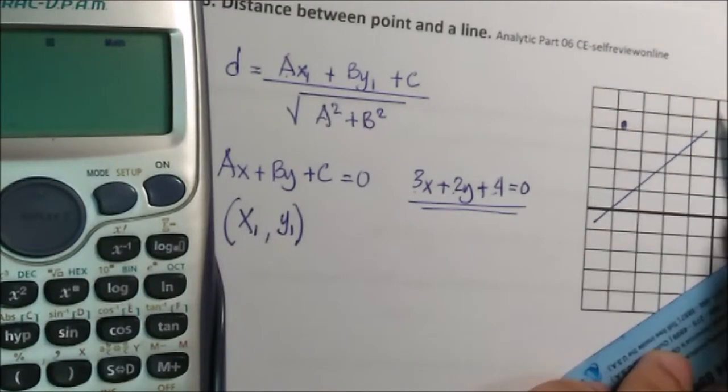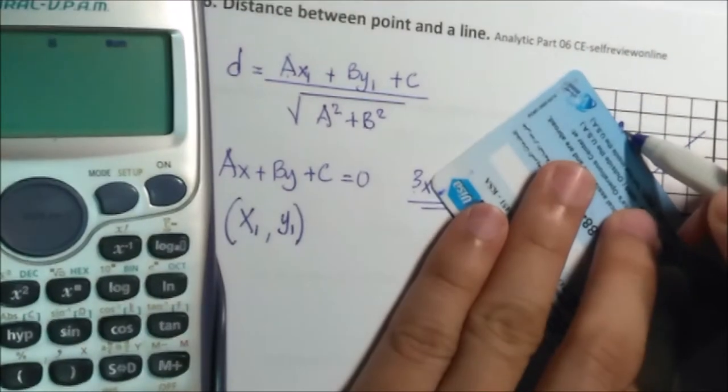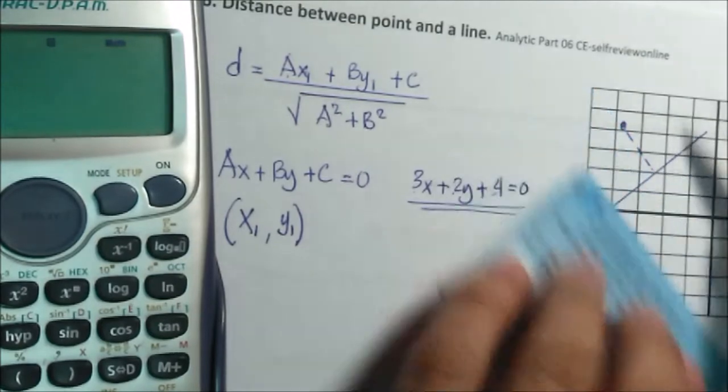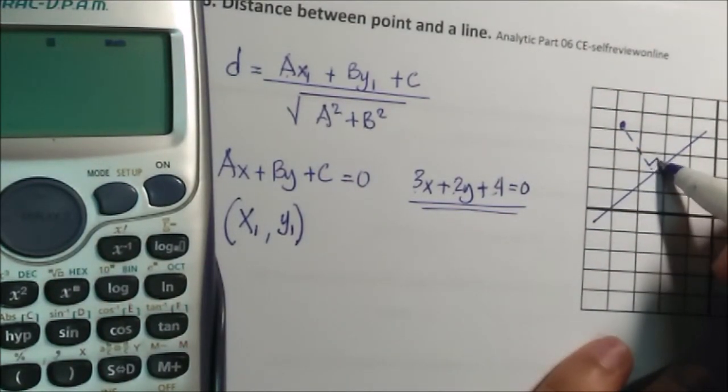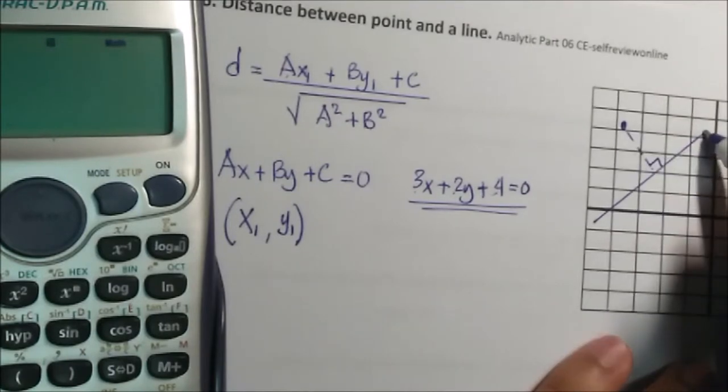And there's a point here, what is the distance? When we say distance, this is the perpendicular distance. This is the shortest distance from a point to a line.